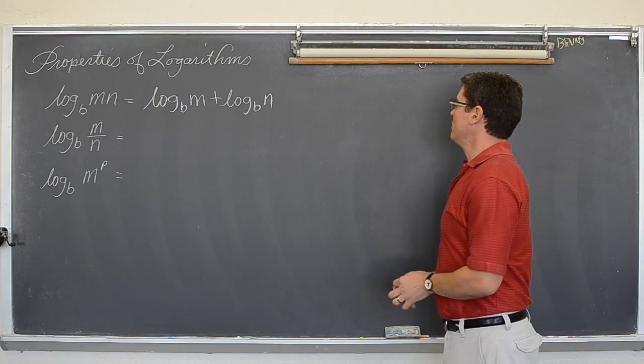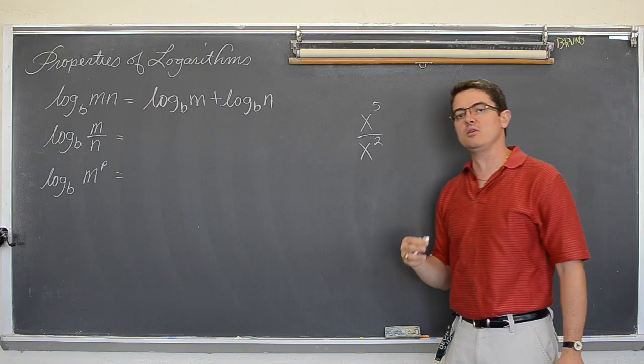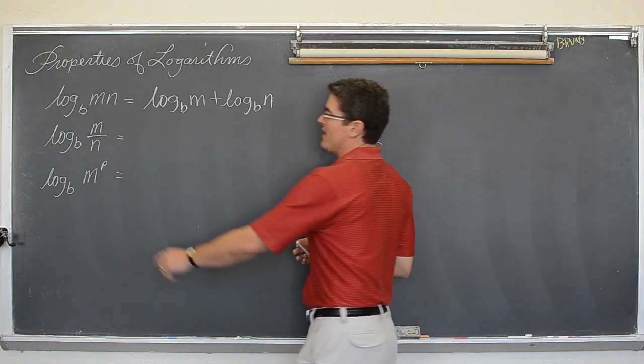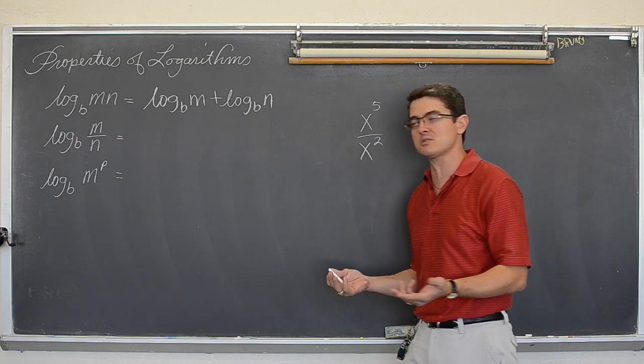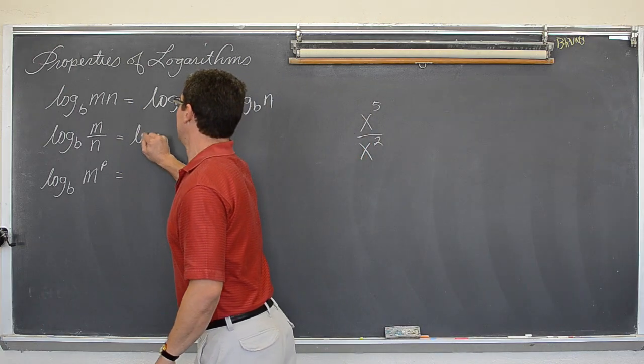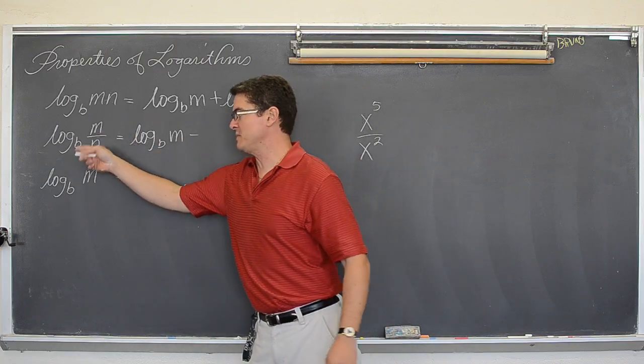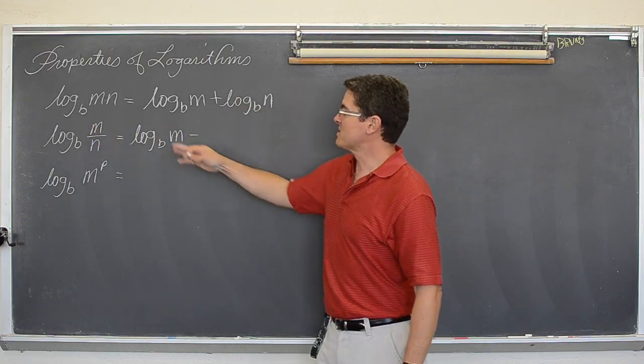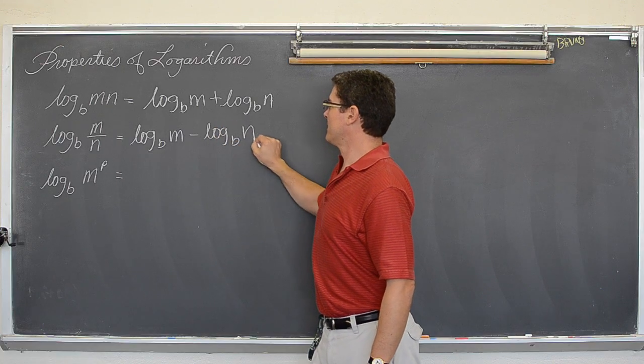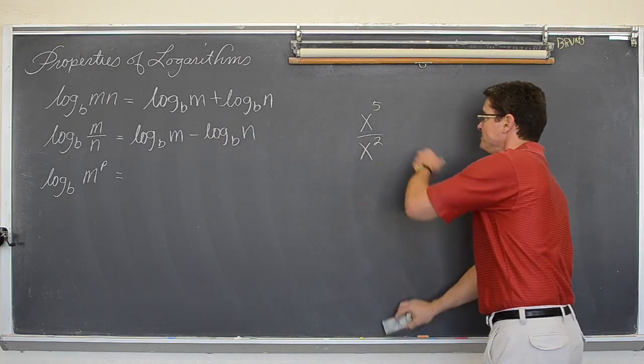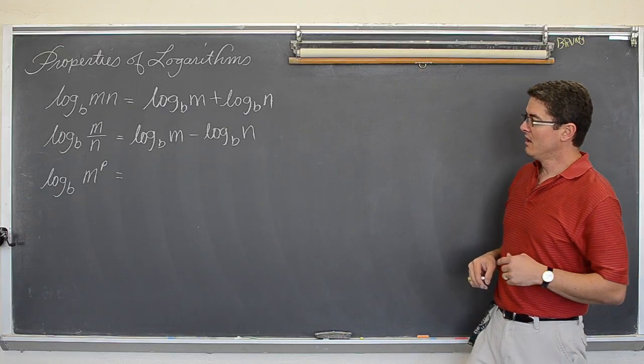Well, what do you do when you divide like bases and you are learning exponents? You have been taught that you subtract. So, when you have division and a like base, you subtract the exponents. Logarithms give you exponents. So, the log base b of m, this is where log base b of m divided by n is going to be equal to log base b of m minus log base b of n. Again, very similar to when you are dividing like bases in exponential form.